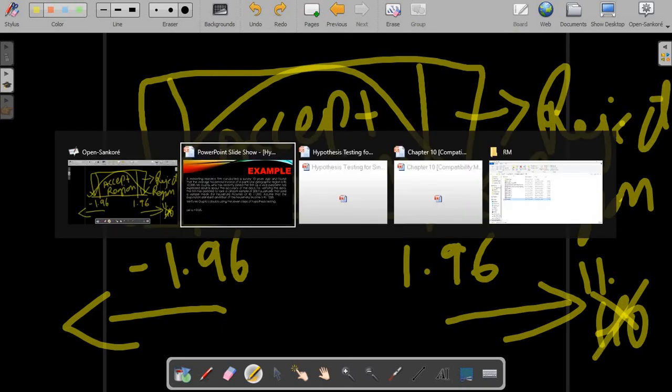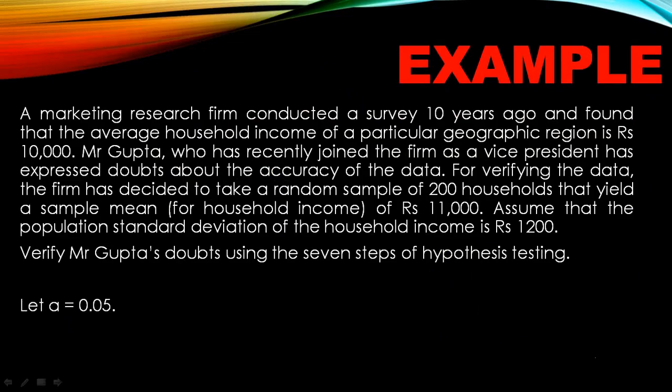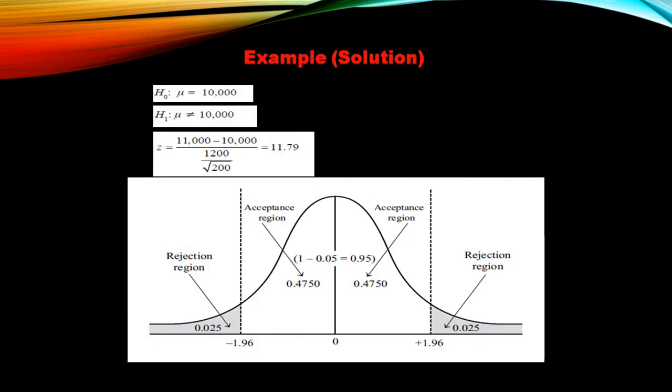Let us get back to our slides. This is the final solution. This is how your solution would look like. Your z comes to 11.79. This is your acceptance region. This is your rejection region. Our value was much beyond 1.96. It lies in the rejection region, so obviously we are going to reject the null hypothesis.